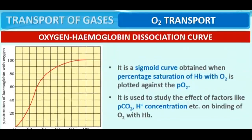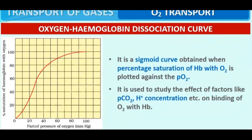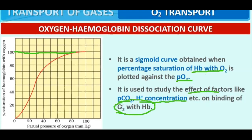Now let us read about the oxygen-hemoglobin dissociation curve. This curve is sigmoid in shape and is obtained when the percentage saturation of Hb with O2 is plotted against pO2. When pO2 is 80 to 100, hemoglobin is highly saturated. As partial pressure decreases, saturation of hemoglobin also decreases. This curve is used to study the effect of factors like pCO2, H+ concentration, etc. on the binding of oxygen with hemoglobin.